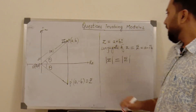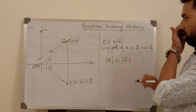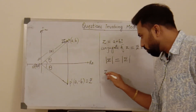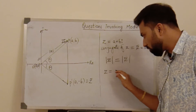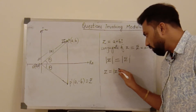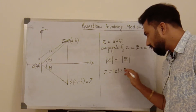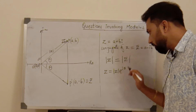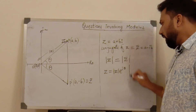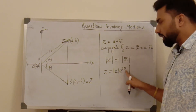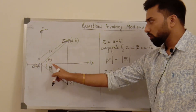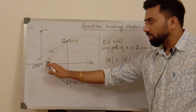Assuming you know the exponential form of a complex number: z = |z| · e^(iθ), where theta corresponds to the angle. And here, because the theta corresponds to this angle...